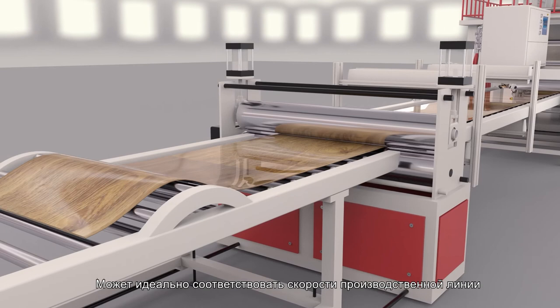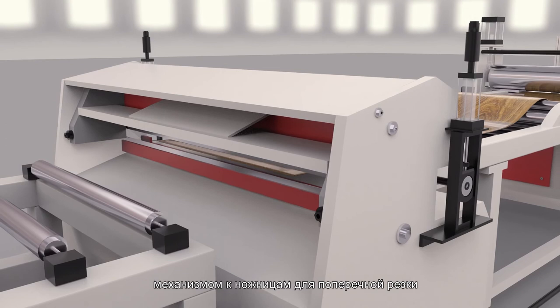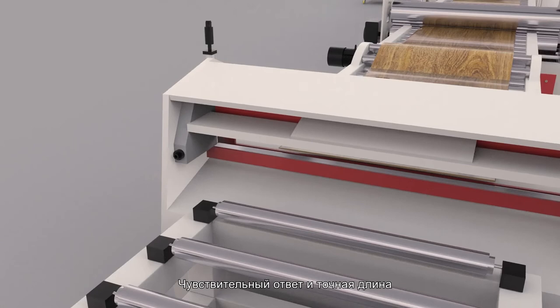Shearing Machine. The material strap is transported to the shearing machine by the tractor for cross-cutting. For the cutting length, the signal is transmitted by photoelectric switch so that the response can be sensitive and the length can be accurate.